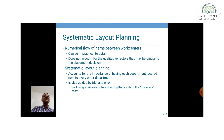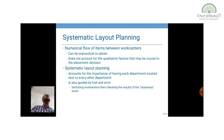Coming to the second method: Systematic Layout Planning. Theoretically, systematic layout planning is used when the numerical flow of items between work centres is not given. In the previous example, numerical flow was given, but when you do not have that flow you will go for systematic layout planning, which accounts for qualitative factors crucial to the placement decision. It accounts for the importance of having each department located next to another department, and it is guided by trial and error — switching work centres and then checking the results and closeness.